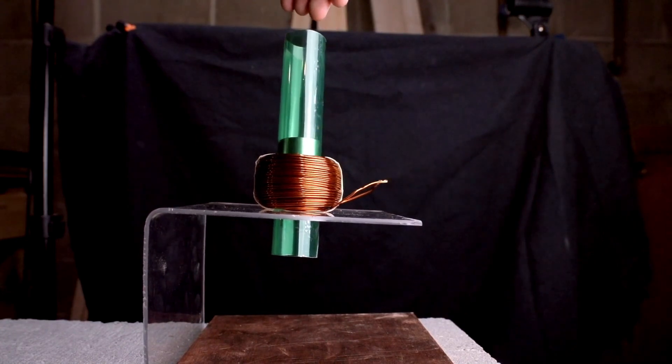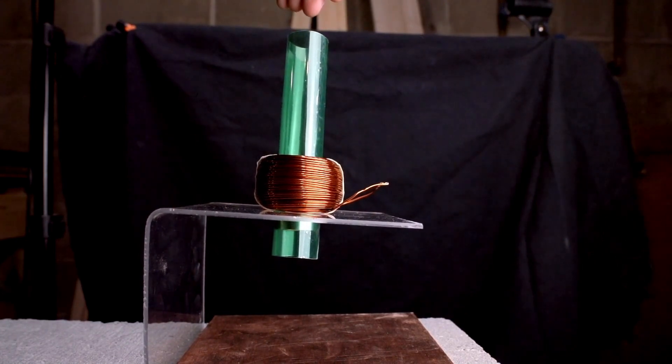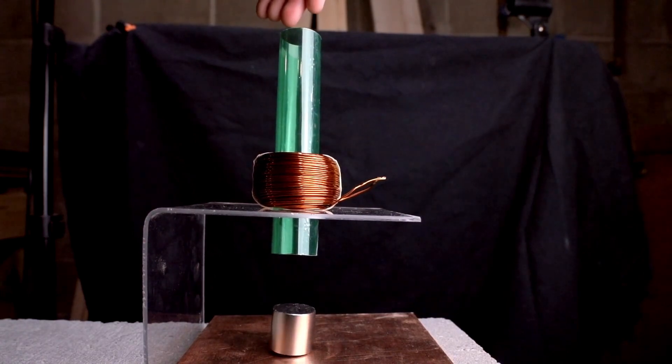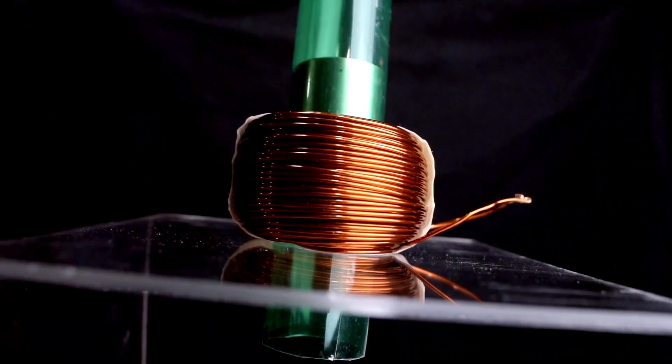Electrons can now make a complete orbit around the coil in response to the oncoming magnetic field, and so the magnet slows down as its momentum is converted into electrical current.